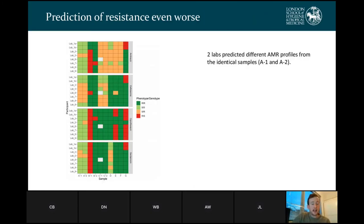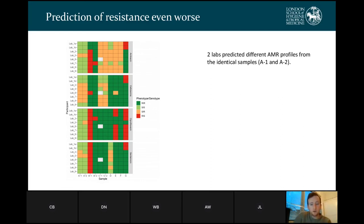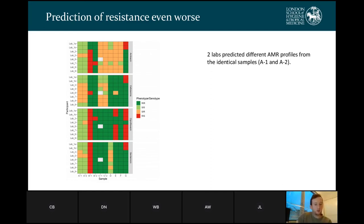We found the prediction of actual resistance unfortunately even worse. Where the phenotype is resistant and the prediction is resistant, it's dark green; where it's sensitive and sensitive, it's light green; where they differ, it's orange and red. There are quite large differences across a lot of the samples. This included two labs predicting different AMR profiles from identical samples we sent them. This shows that there is quite a lot of manual human analysis of this data — these are not purely automated pipelines. Someone needs to look over them, check what's going on, and make an actual decision at the end.